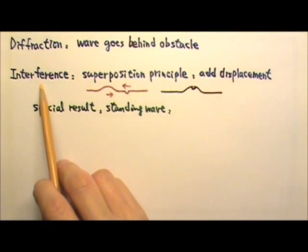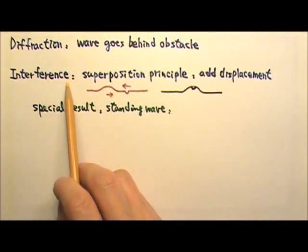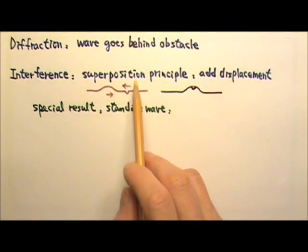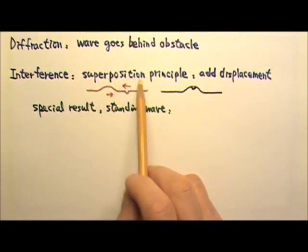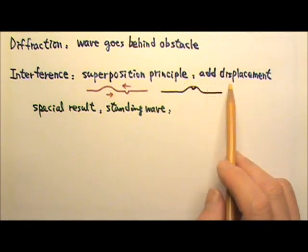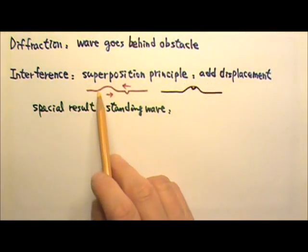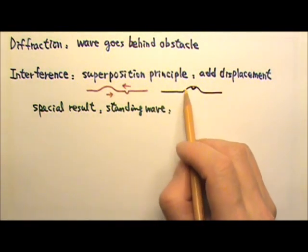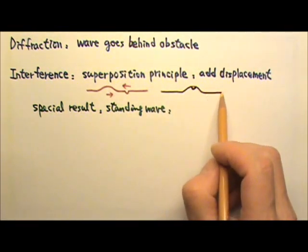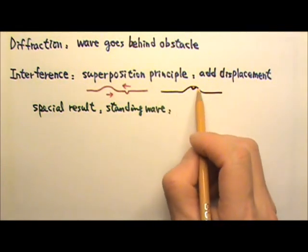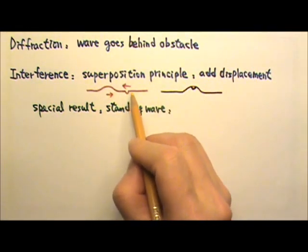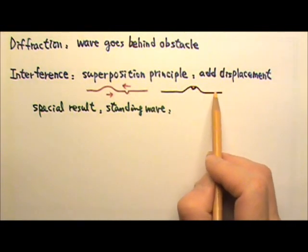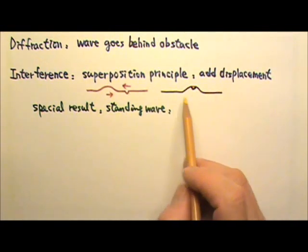Interference happens when two waves reach the same location at the same time. To figure out what the wave looks like when two waves overlap, we can use the superposition principle and add the displacements together. For example, when these two waves overlap, usually what I do is I draw the bigger wave and then I draw that little dip right here. This would be the result of their interference when they overlap.